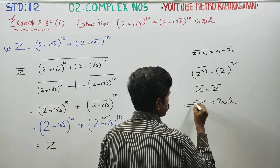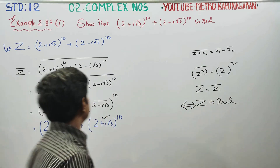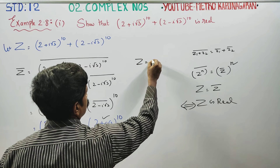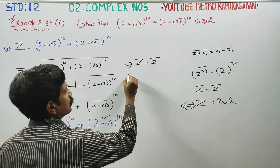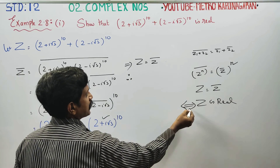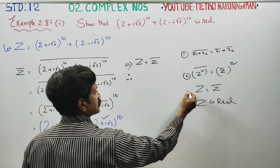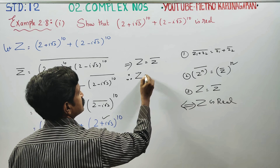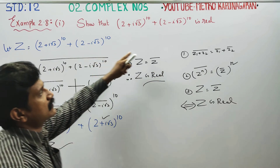This is one property: z equals z conjugate implies z is real. We use this property — specifically, the property that if z equals its own conjugate, then z is real. Therefore, z is real.